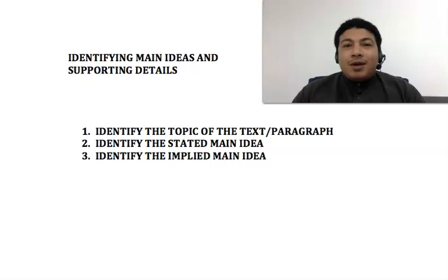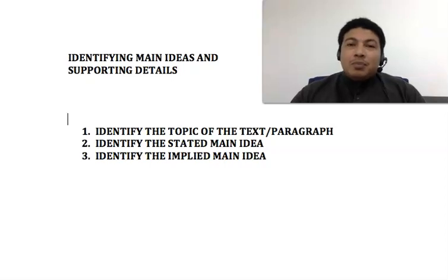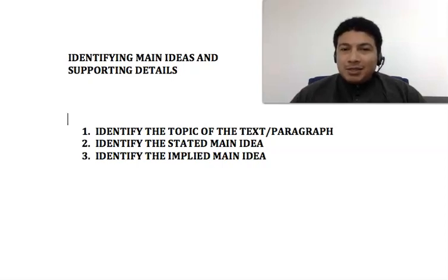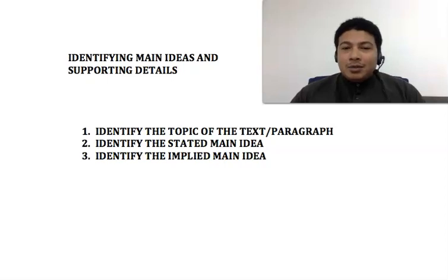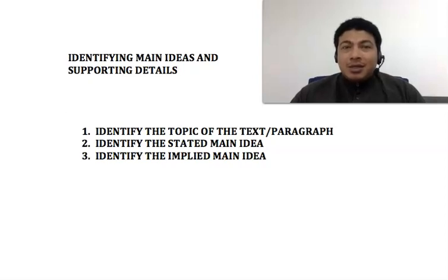Secondly, we need to identify the stated main idea — what the author states in the article, telling the purpose of the author writing that article. That is the stated main idea. It is normally in a sentence. And the third thing is to identify the implied main idea. The implied main idea is just the opposite of stated main idea. If stated main idea is what the author writes and states in the article, the purpose of the article, what the article is all about,